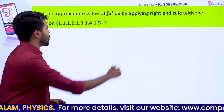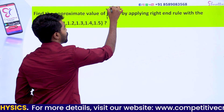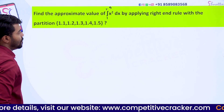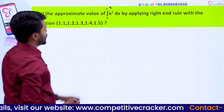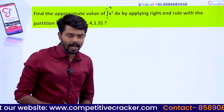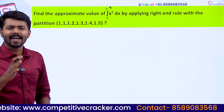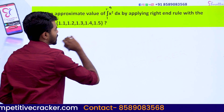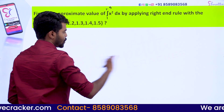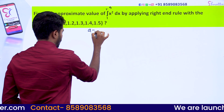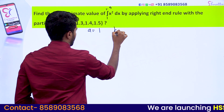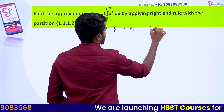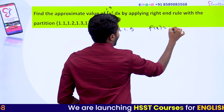Find the approximate value of integral 1 to 1.5 of x² dx by applying the right-hand rule with partition 1.1, 1.2, 1.3, 1.4 and 1.5. Here, a is the lower limit 1, b is the upper limit 1.5, and f(x) is equal to x².